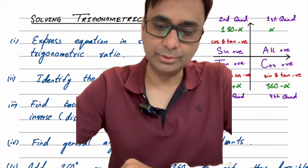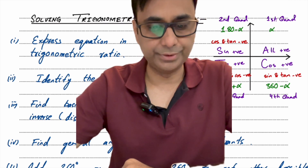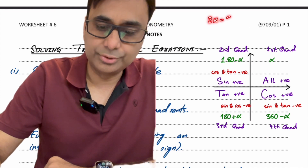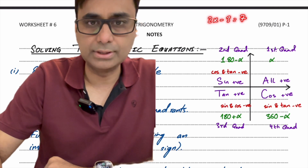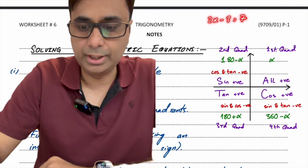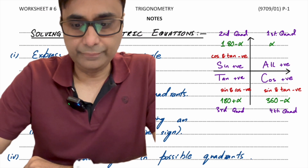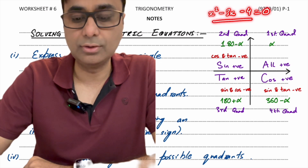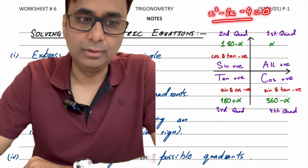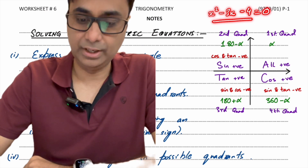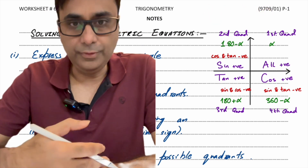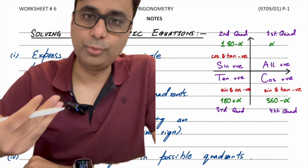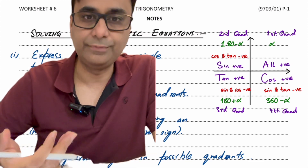Trigonometric equations are not as simple to solve as compared to other algebraic equations. For a simple algebraic equation like 2x minus 3 equals 7, you just rearrange it and get the value of x. For a quadratic equation like x² minus 3x minus 4 equals 0, you can get two different values of x. But in trigonometric equations, you can have an infinite number of solutions.